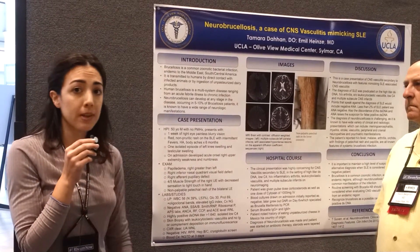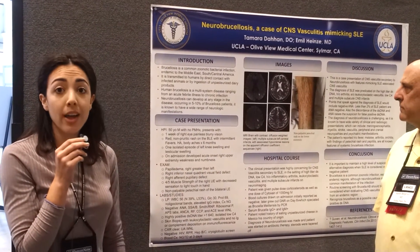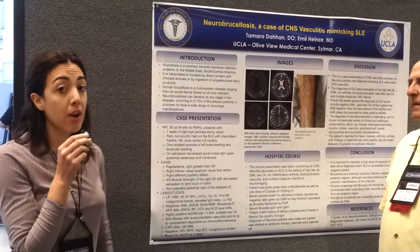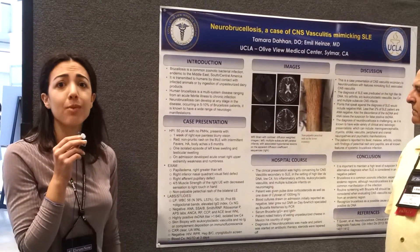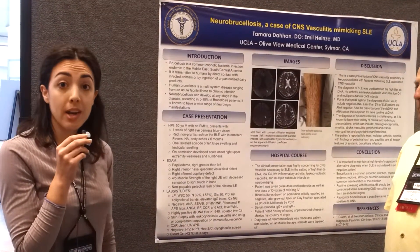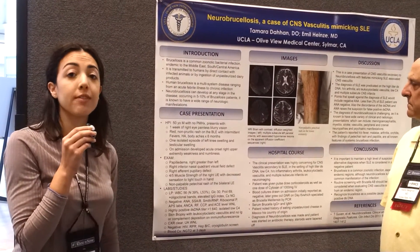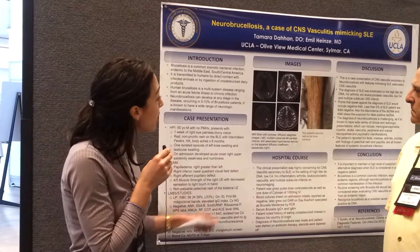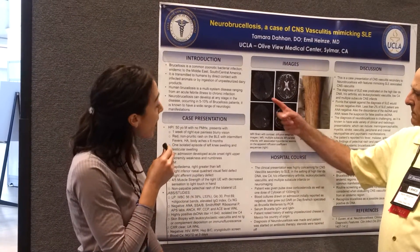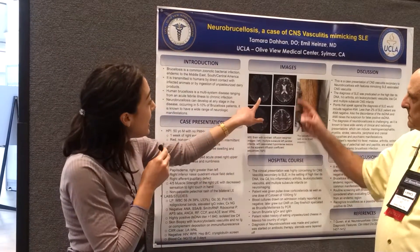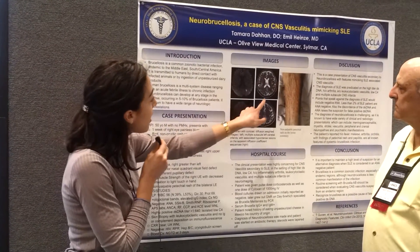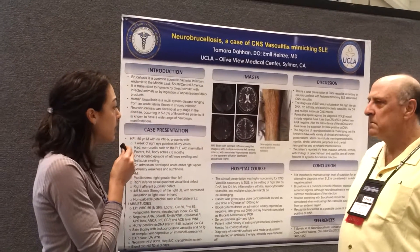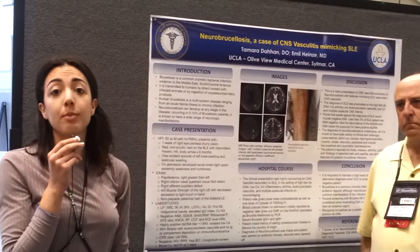So on exam, he was found to have papilledema in the bilateral eyes, right greater than left. Additionally, he was found to have four out of five muscle strength in the right upper extremity with decreased sensation. As a result, we went ahead and imaged him. We got an MRI with contrast of his brain, and it showed that he had multiple subacute infarcts in the left parietal region that you can see here on the imaging — these hyper-intense lesions here with corresponding hypo-intense lesions on the alternative sequences.